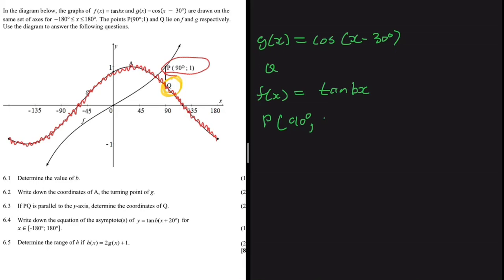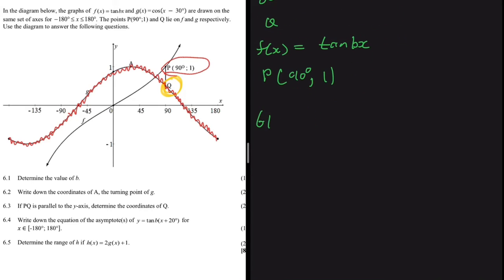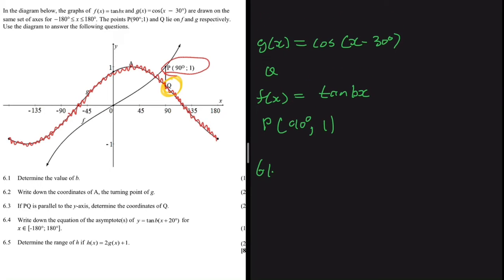Question 6.1 asks us to determine the value of b. Since b is the variable in f(x), and we have point P on f(x), if we substitute point P we'll have known x and y values, leaving b as the only unknown.